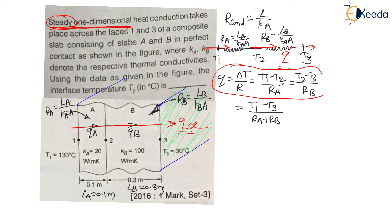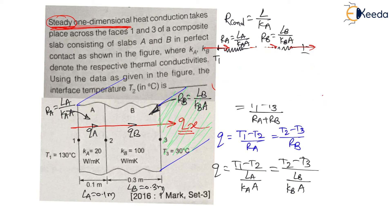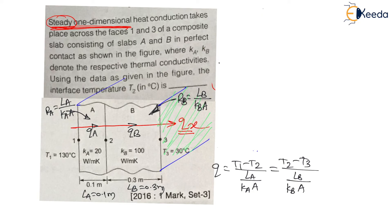Heat transfer through slab A equals heat transfer through slab B. So we write: Q = (T1 − T2)/RA = (T2 − T3)/RB. Substituting: (130 − T2) divided by [LA/(KA · A)] equals (T2 − 30) divided by [LB/(KB · A)]. The area appears on both sides and will cancel out.